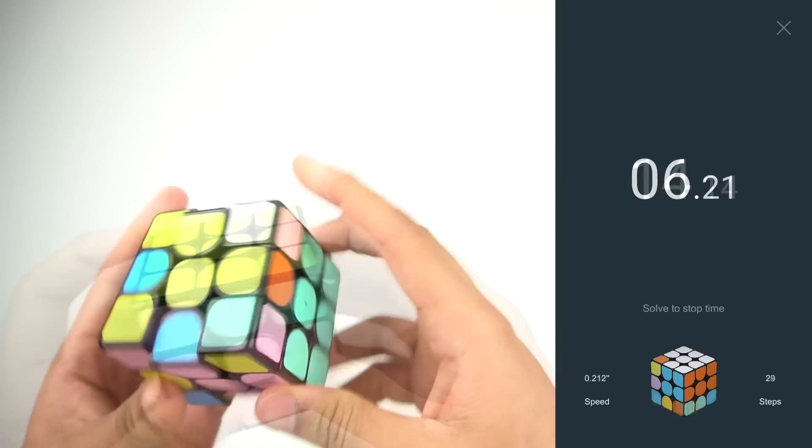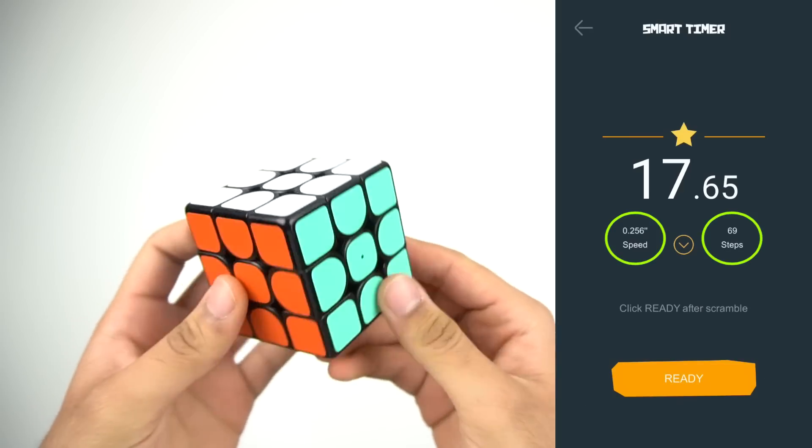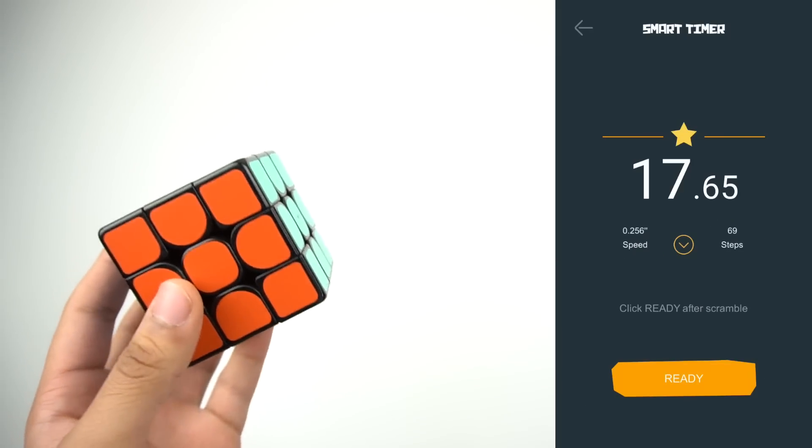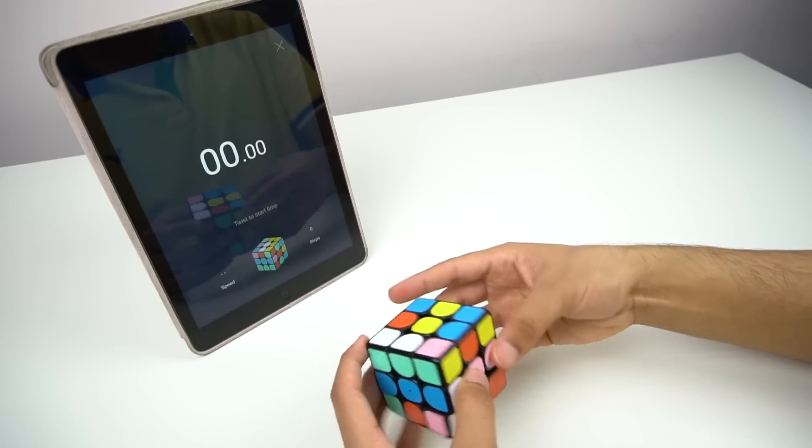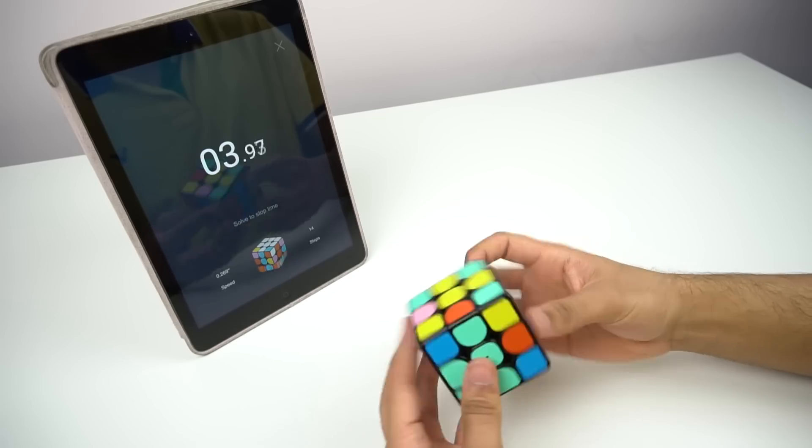When it's solved, it'll show your time along with your average seconds per turn, which is just the inverse of your TPS. There's no inspection, and the timer doesn't track your stats at all. It does, however, show a badge at the top once you get a new personal best.